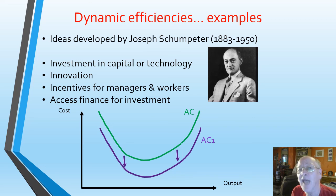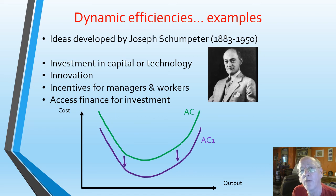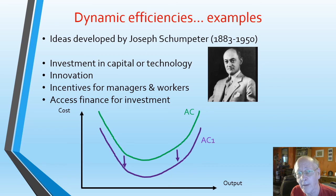Large firms tend to have access to finance — it tends to be a financial economy of scale, so they can borrow money to improve customer service or reduce costs. Overall, the diagram is straightforward: we simply show the average cost curve dropping to show dynamic efficiencies.